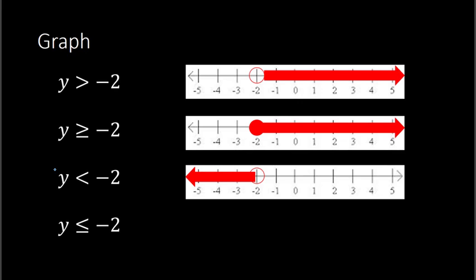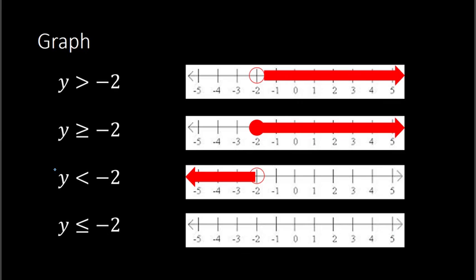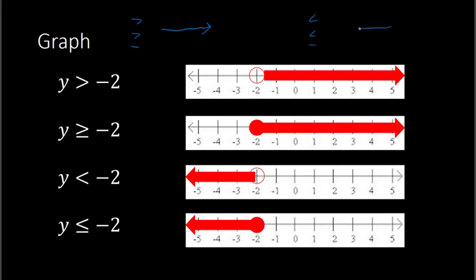Same thing but now with less than or equal to. The less than or equal to sign means it will include negative 2, so it's going to shade in negative 2 and then everything to the left would also be an answer. The key is: greater than, or greater than or equal to — both of those I shade in to the right. And if it's less than or less than or equal to, I shade in to the left.